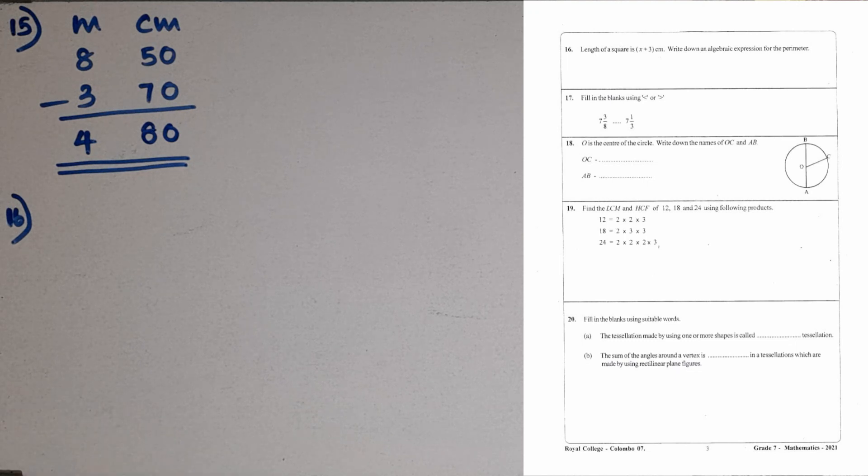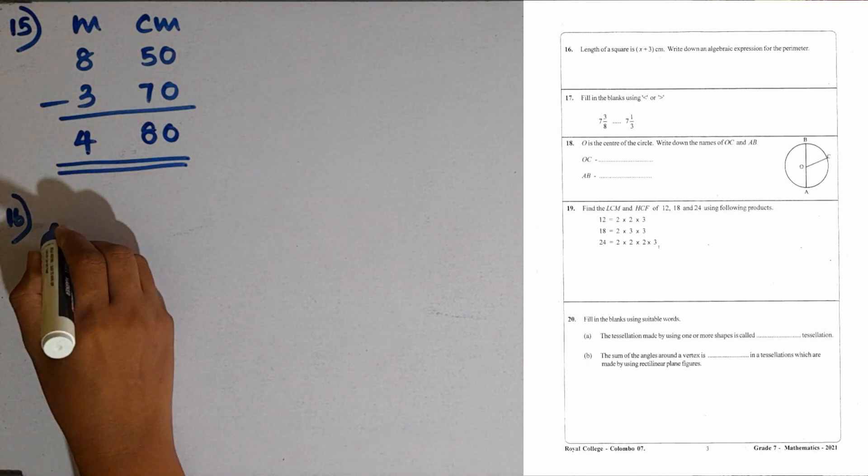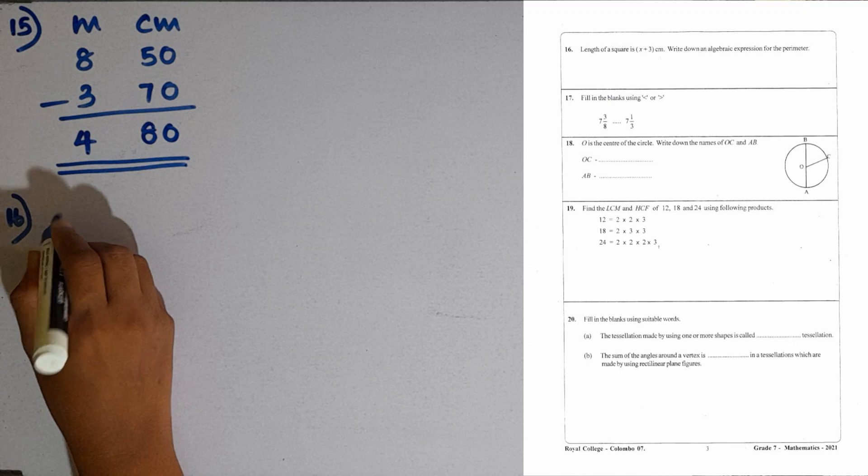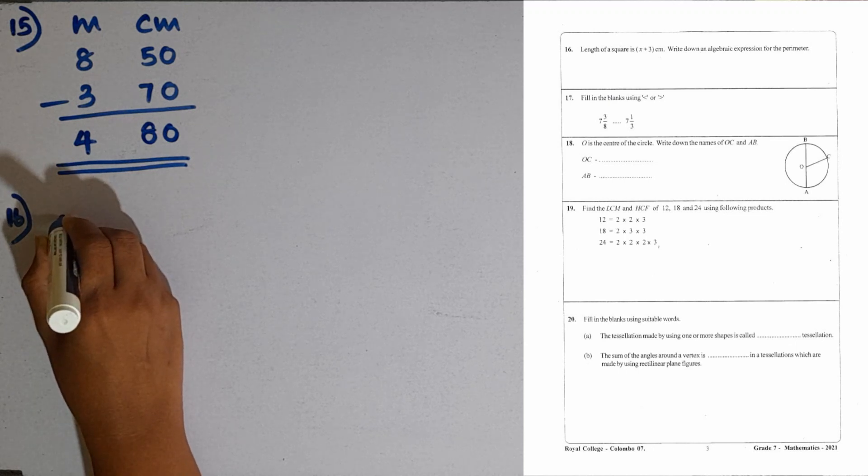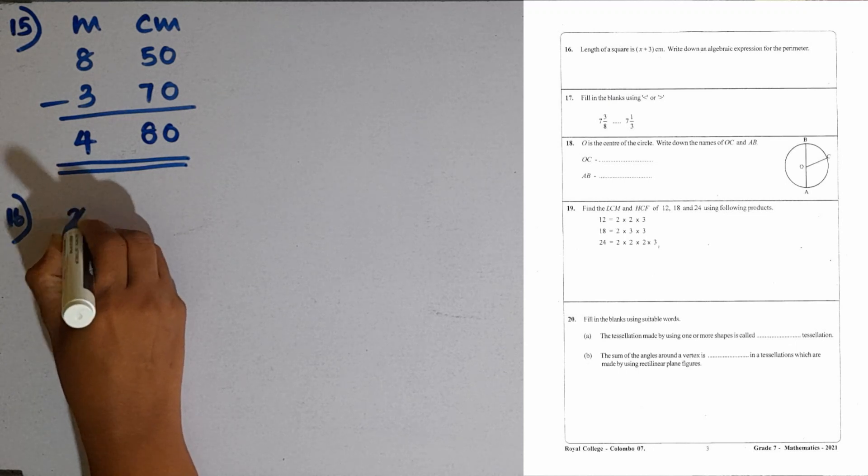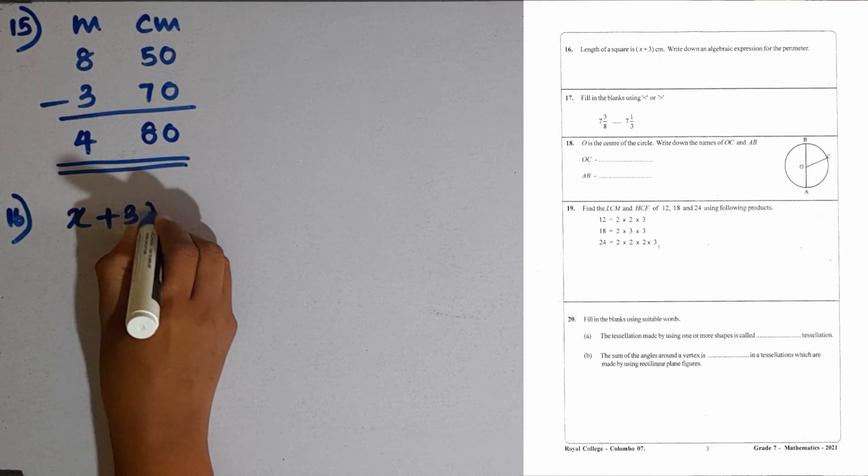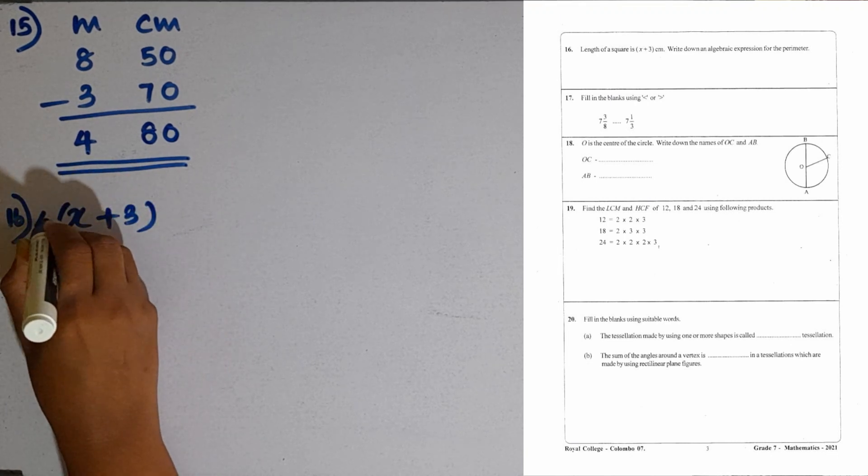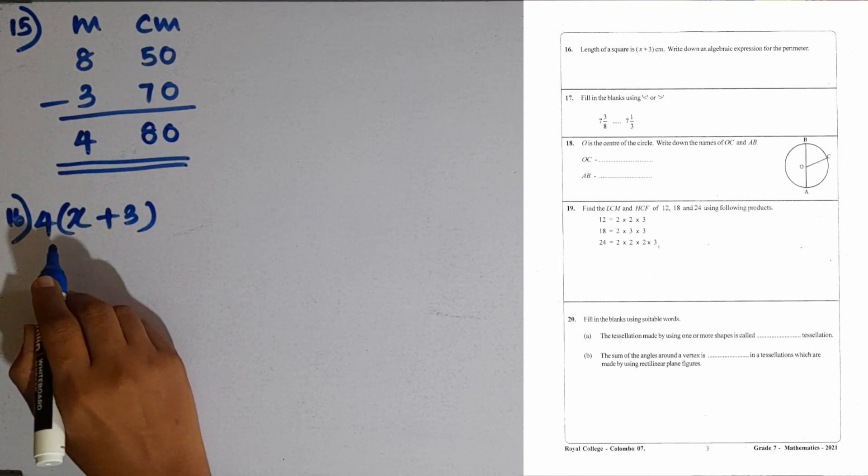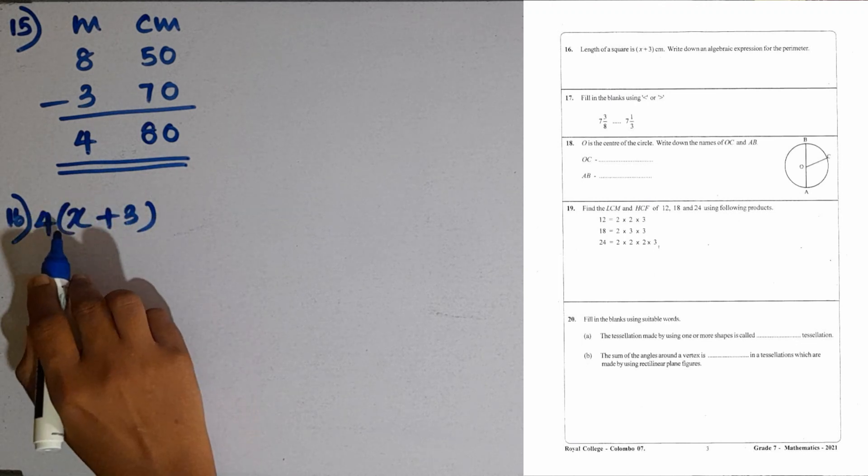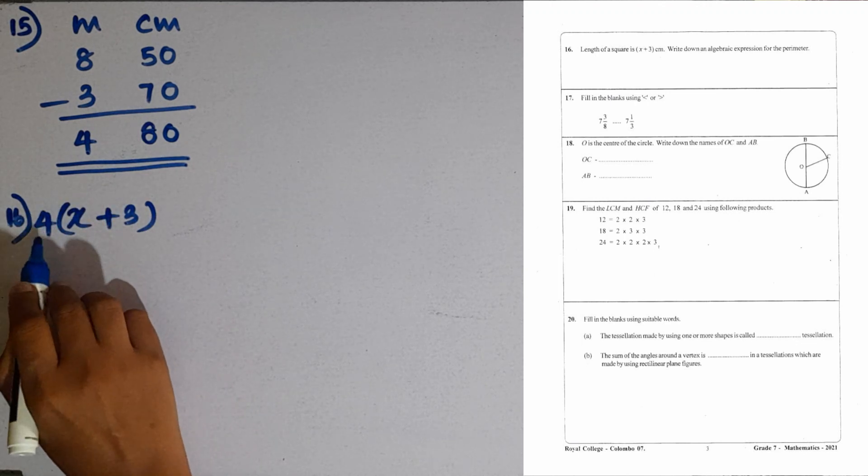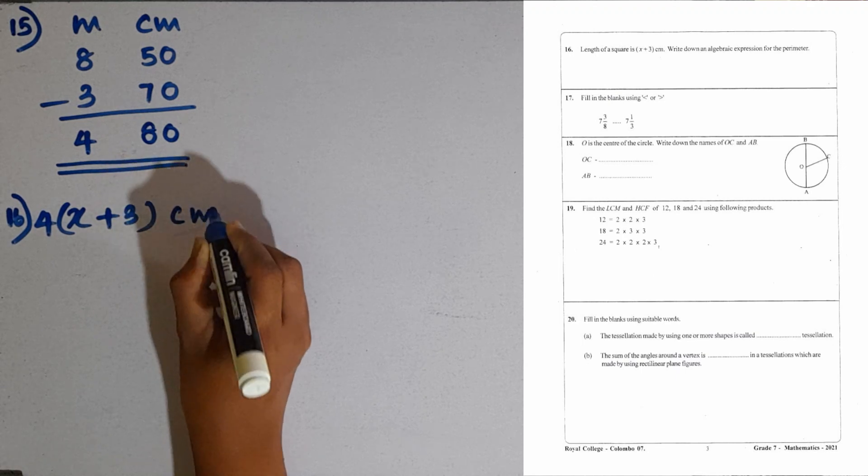Question number 16. Length of a square is x plus 3 centimeters. Write down an algebraic expression for the perimeter. Perimeter means we have to add 4 times x plus 3. That means we can multiply x plus 3 by 4. There are 4 sides in a square, so x plus 3 should be multiplied by 4. This is in centimeters.